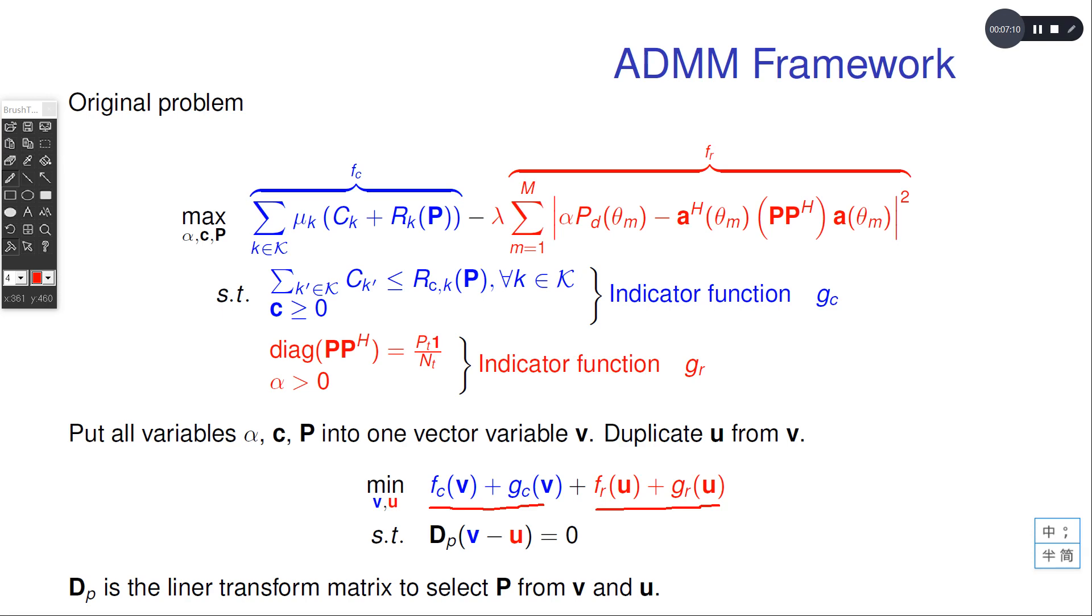Then we reformulate the problem by putting all the blue parts and red parts separately in the objective function. However, to make a connection between the blue and red parts, we introduce an equality constraint.